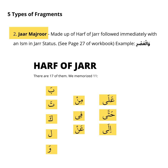The second fragment is Jar-Majroor, which is made up of a Harf of Jar followed immediately with an ism in Jar status, like wal-asri. We learned 17 Harf-of-Jar so far: Ba, Ta, Ka, F, La, M, Wa, W, Min, Fi, An, Ala, Hatta, and Ila.